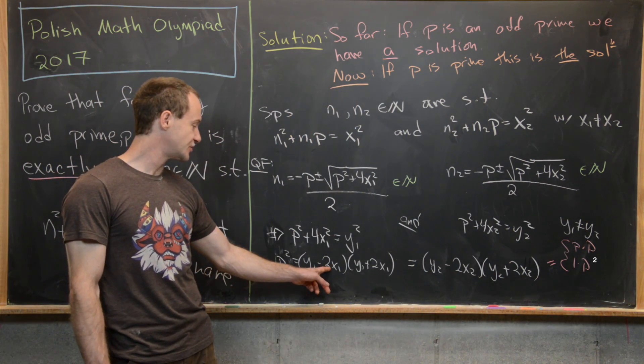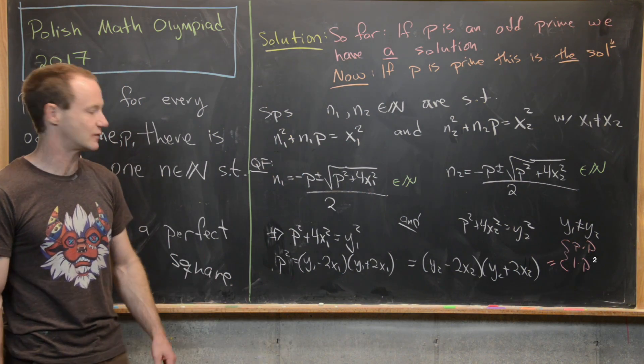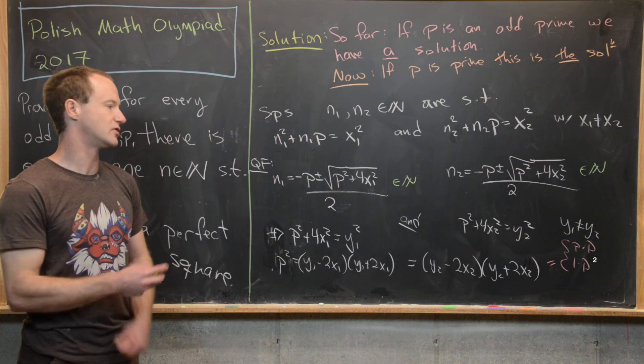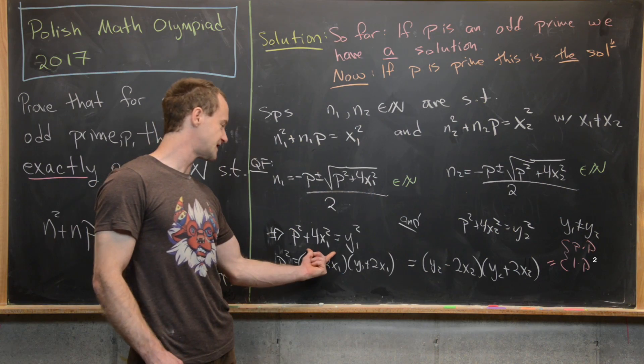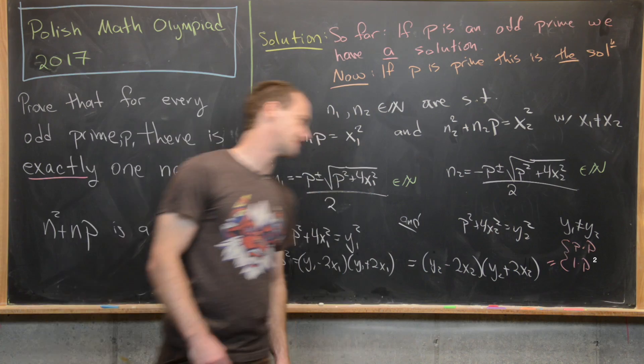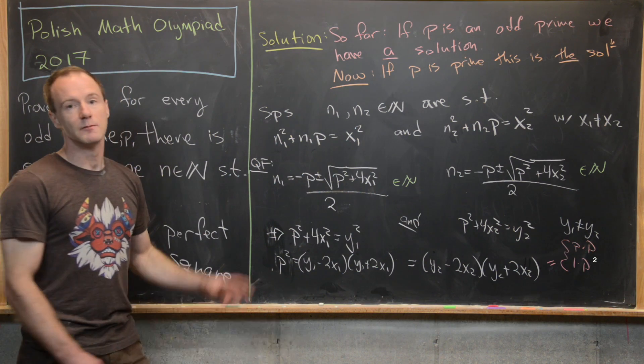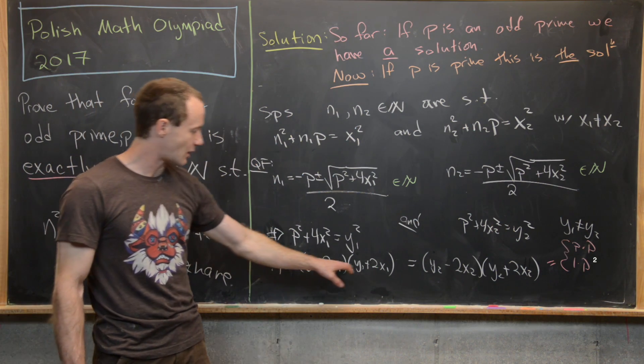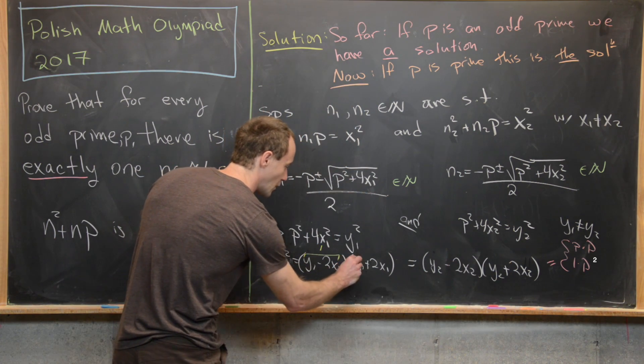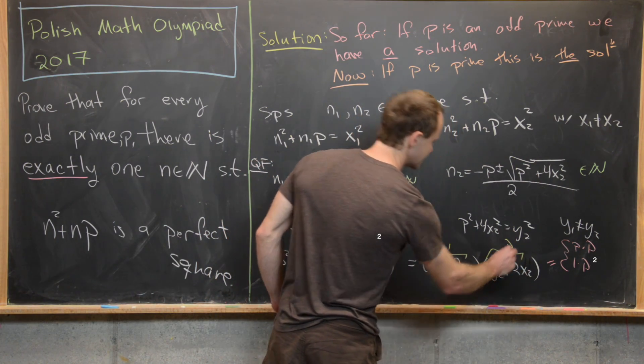But we know that y one minus two x one is not equal to y one plus two x one given that x is not equal to zero. And similarly for y two minus two x two and y two plus two x two. So that means it's impossible for this to be equal to p and this to be equal to p, and this to be equal to p and this to be equal to p. So that means that one of them is equal to one and one of them is equal to p. But since this guy is smaller than this guy, and furthermore this guy is smaller than this guy, we see that this one must be equal to one and this one must be equal to p. So we have this is equal to one and this is equal to p.